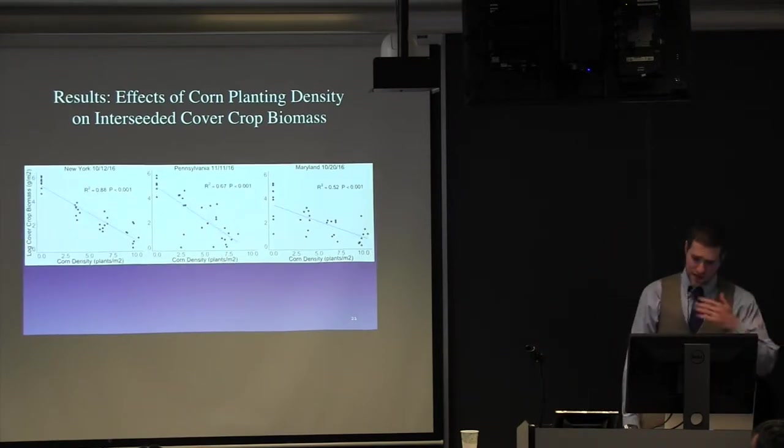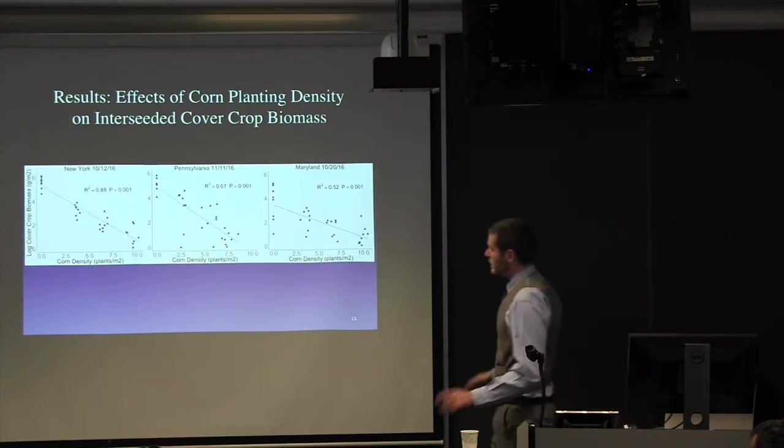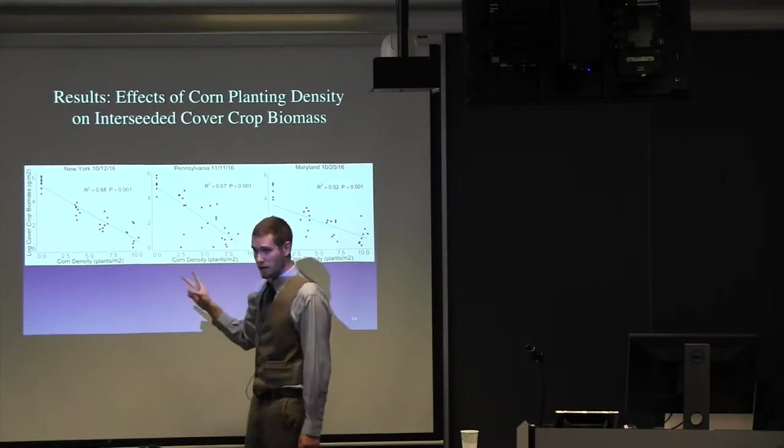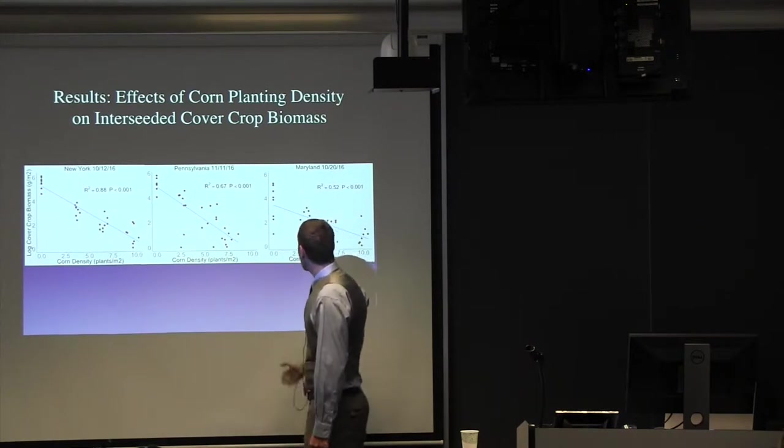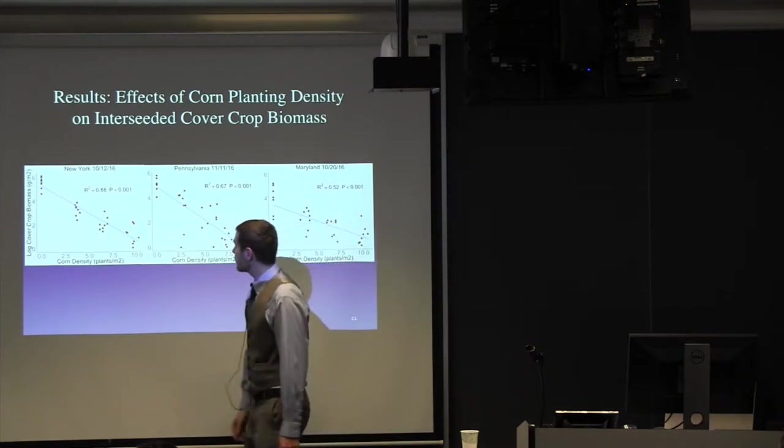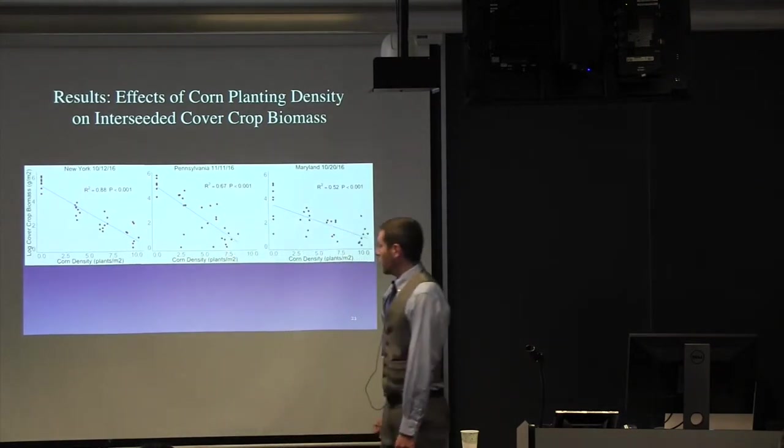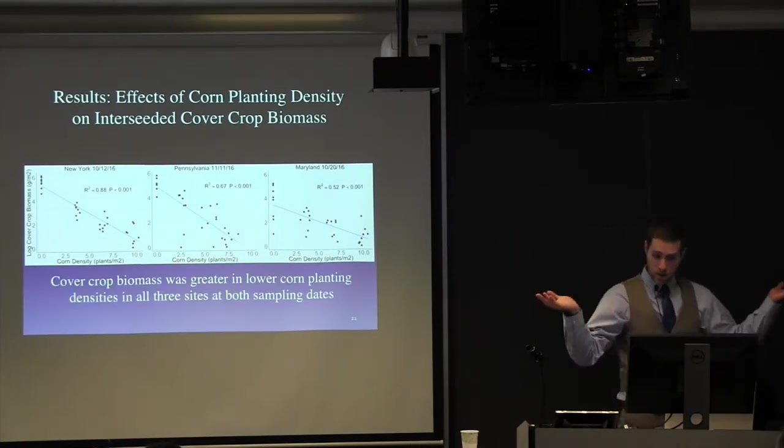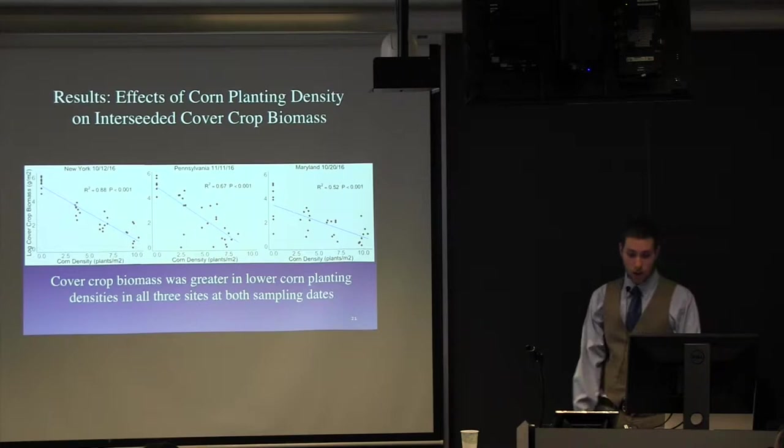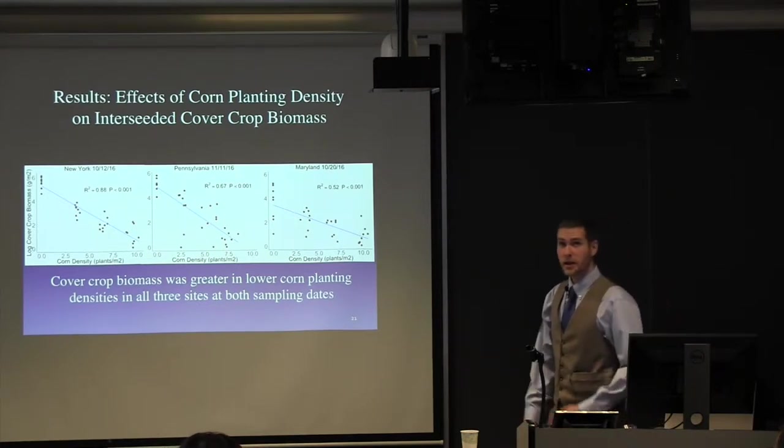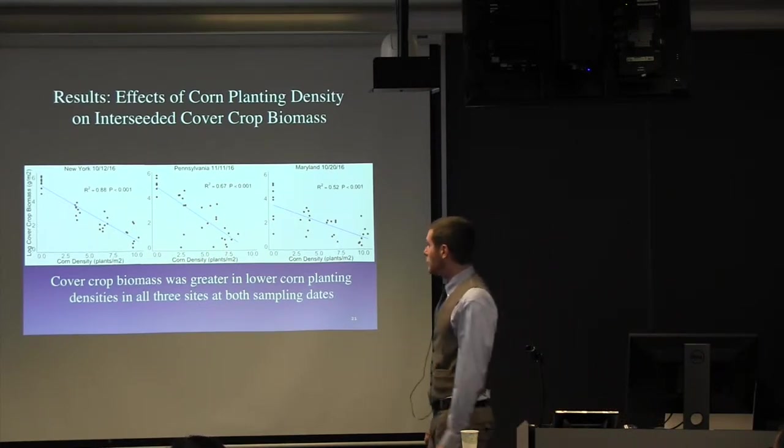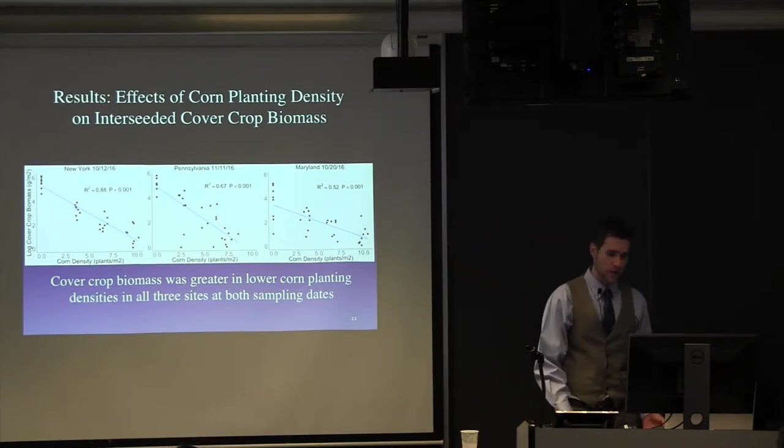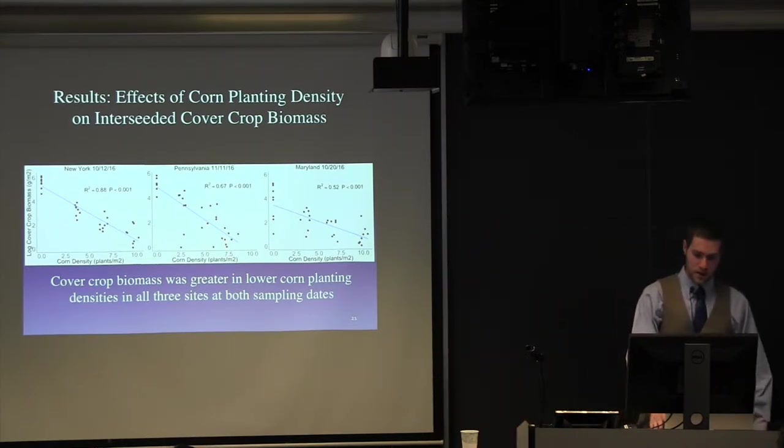And this trend continued. This is the exact same axis. The only change here is that we're looking at the 110 day sampling date. And again, some very nice regression. So, the takeaway here was cover crop biomass was greater in lower corn planting densities in all three sites at both sample dates. And this is pretty consistent with a few papers that have been written on the subject.